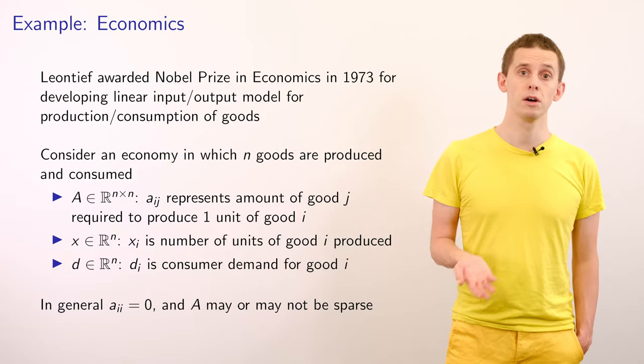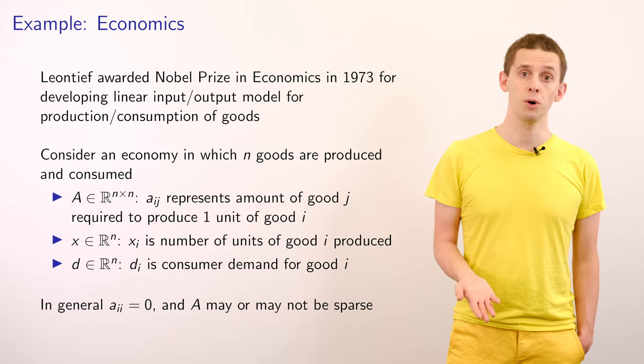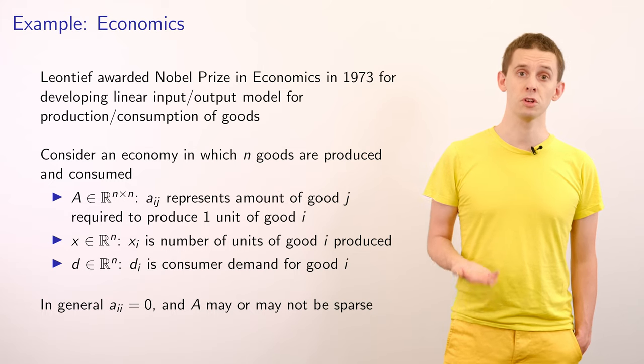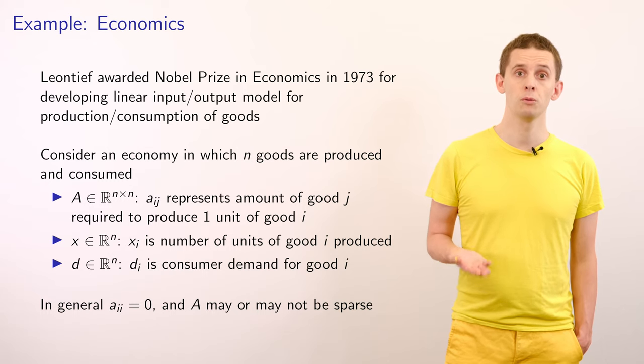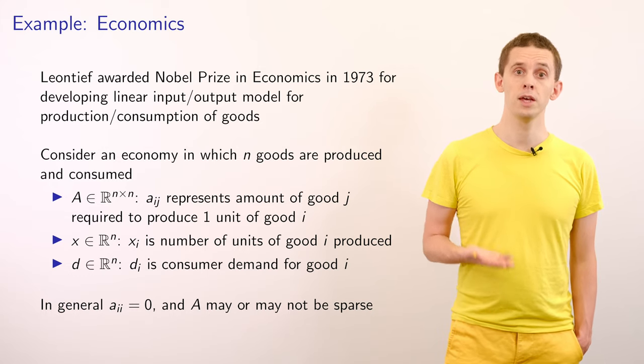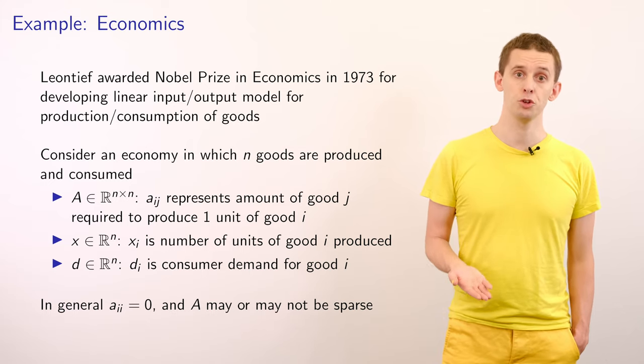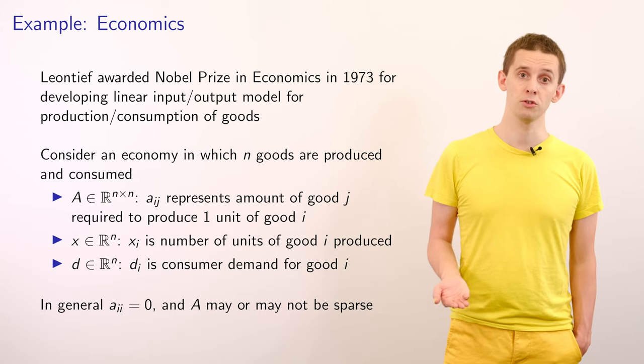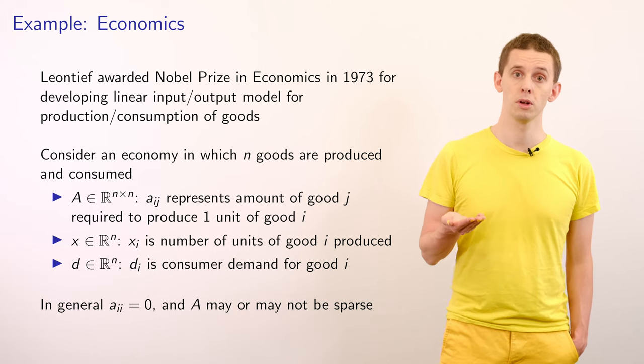Another example is from the field of economics. And in 1973, Leontief was awarded the Nobel Prize in Economics for developing a linear input-output model for the production and consumption of goods. And suppose we look at an economy where n different types of goods are produced and consumed. Then we could introduce the matrix A, where an element Aij would represent the amount of good j required to produce one unit of good i. We could also introduce a vector X of the amounts of each type of good that are produced and a vector D of the amounts of each type of good that are consumed. And in general, if we looked at our matrix A, then we would expect that the diagonal terms of this matrix will be zero because we would not require a certain good in order to produce a unit of that good.